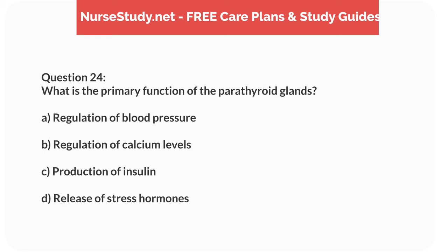Question 24. What is the primary function of the parathyroid glands? A. Regulation of blood pressure. B. Regulation of calcium levels. C. Production of insulin. D. Release of stress hormones.